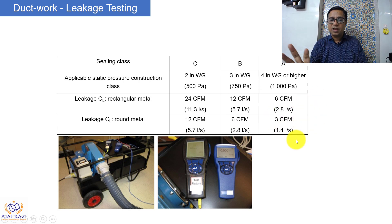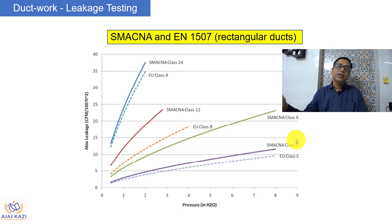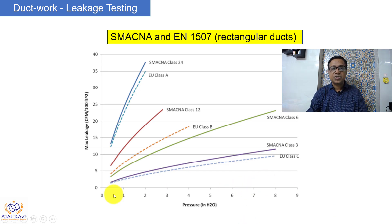Duct leak testing pressurizes a closed section of duct to a known pressure. You have to find out what pressure you are going to test the ducting at. There is always a low, medium, and high pressure class for ducting. Based on your application, you need to decide the pressure class. The amount of leakage at a specified pressure is calculated by measuring the amount of air that is pumped into a closed duct system.